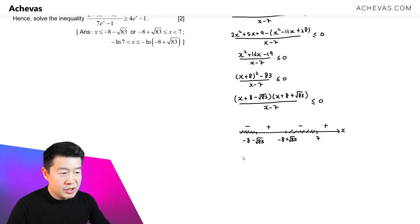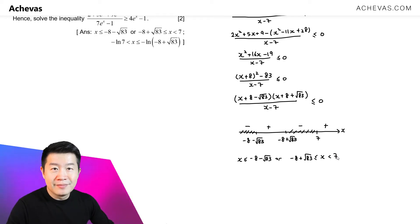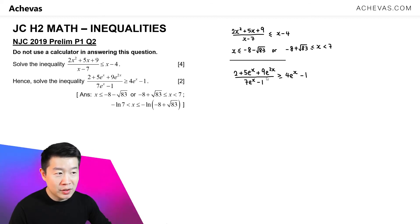With all these considerations, x is less than or equal to minus 8 minus square root of 83, or x is between minus 8 plus square root of 83 and strictly less than 7. Now we are going to use the results from this inequality to solve a new inequality, and they are actually similar.